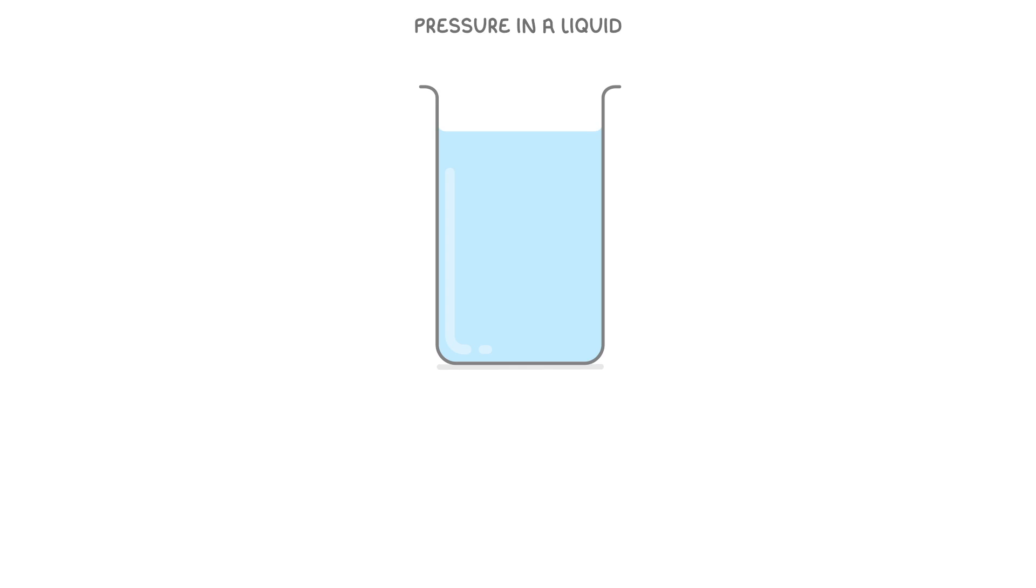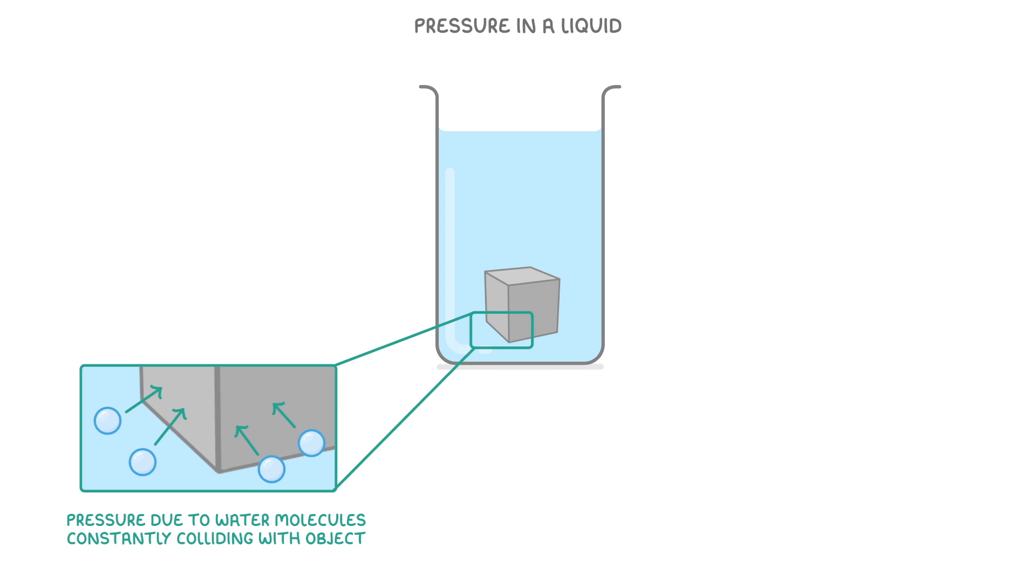Now, pressure in a liquid is a bit of a weird one. If you place an object in some water, then most of the pressure acting on that object will be due to all of the surrounding water molecules that are constantly colliding with it. However, a small component will be due to the weight of all the water above the object, which will be felt as a downwards force.